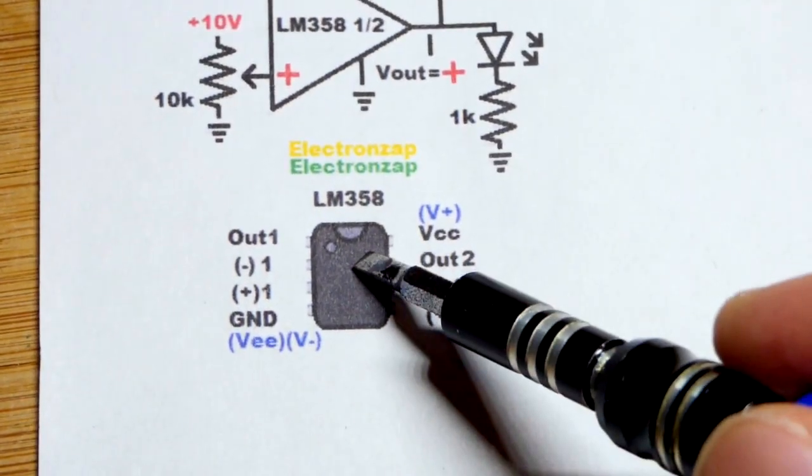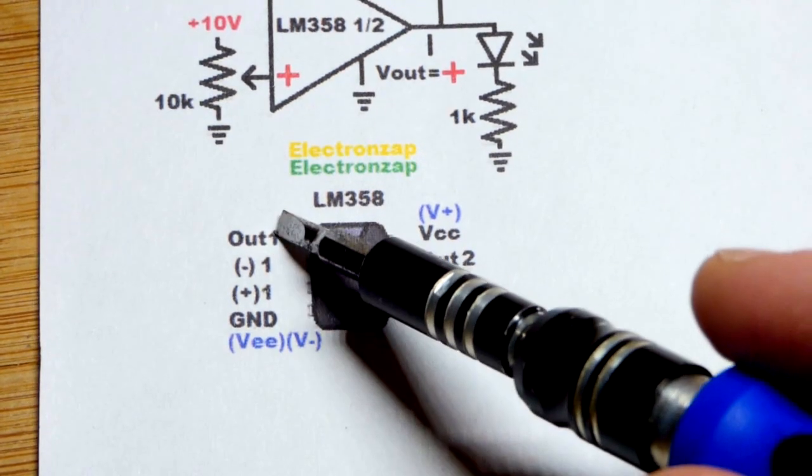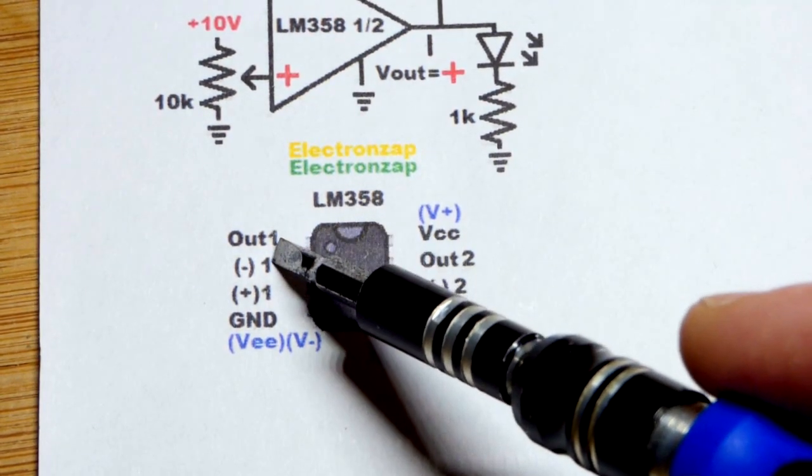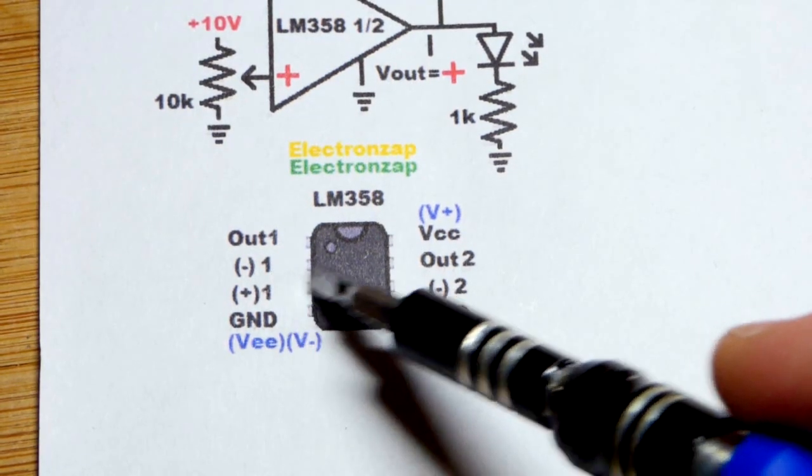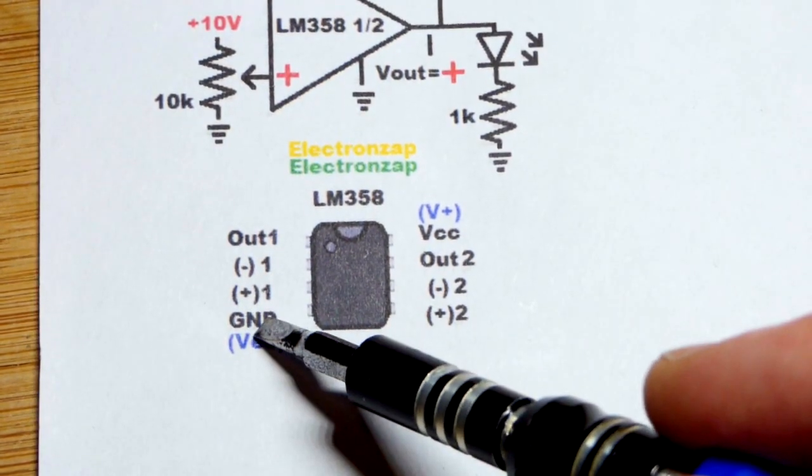And here is the pin layout of the integrated circuit. We saw the output was at the top. Little wire was going from output to inverting input. And then the non-inverting input had the trim pot off to the side. And we had to power it. Always make sure you power it.